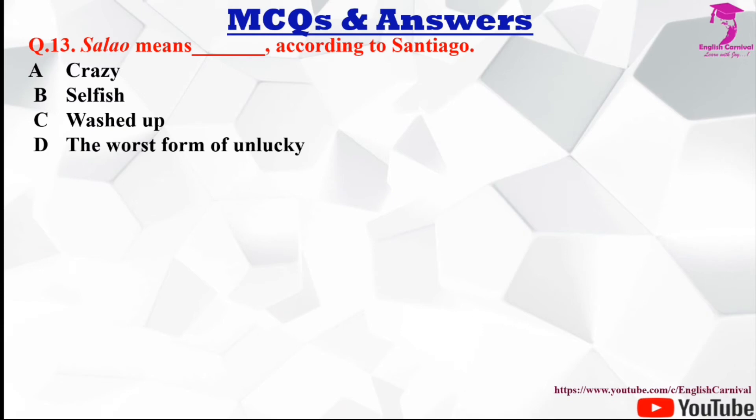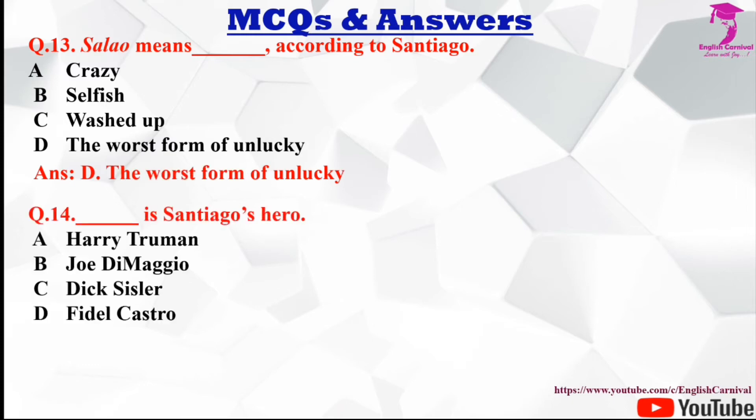Question number thirteen: 'Salao' means dash, according to Santiago. Options are A crazy, B selfish, C washed up, and D the worst form of unlucky. The correct answer is D, the worst form of unlucky.